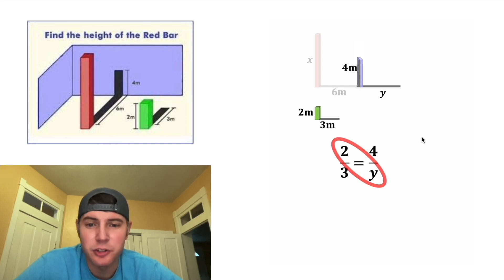And now to solve for Y, we can cross multiply. Two times Y will give us two Y, and that's going to be equal to three times four, which is 12. And then we can divide both sides by two and we get Y is equal to six.